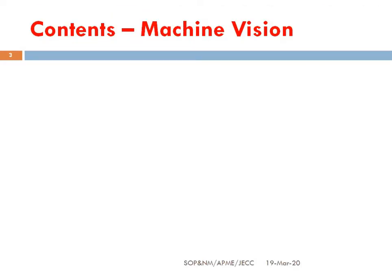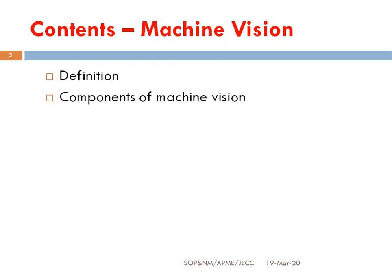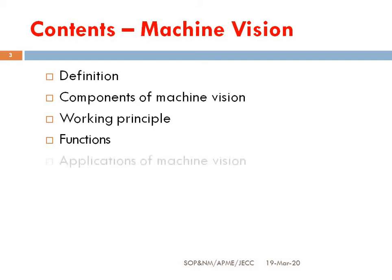The contents of the presentation are: definition — what is meant by machine vision systems — the different components of machine vision, the working principle of a machine vision system, the different functions of machine vision, machine vision applications, and advantages of machine vision systems.